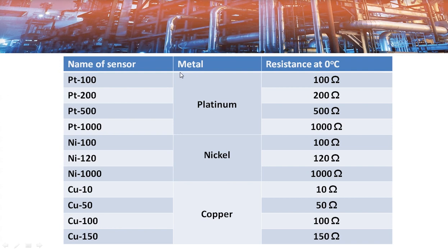Here you can see the different RTD sensors for these three metals: Platinum 100, Platinum 200, Nickel 100, Nickel 120, and Copper 100. These sensors are used for different applications, and the number in the sensor name indicates the resistance at 0°C. For example, Platinum 100 has 100 ohms and Platinum 1000 has 1000 ohms at 0°C.